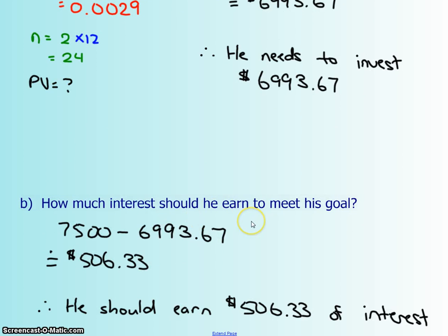So how much interest would he have earned to meet his goal? As in, if he decided to invest the 7,000, really how much is he getting as some sort of a bonus to get to the 7,500? What we're going to do is we're just going to subtract. Take the future value, subtract the present value, and you're going to get how much interest he actually earned, so he should earn $506.33 of interest.